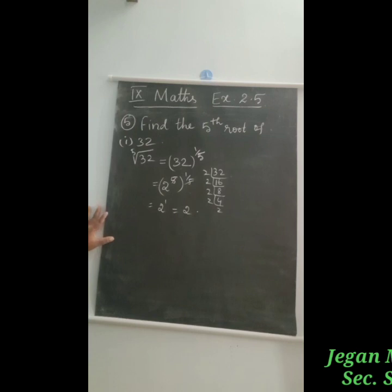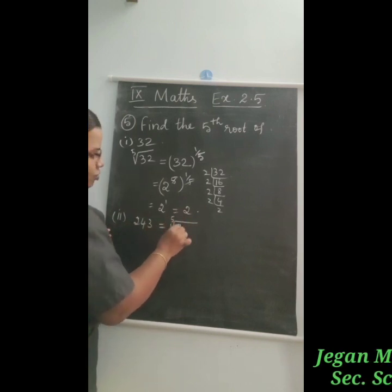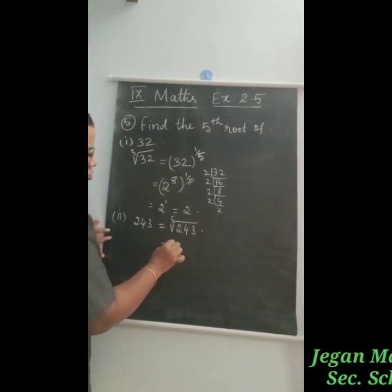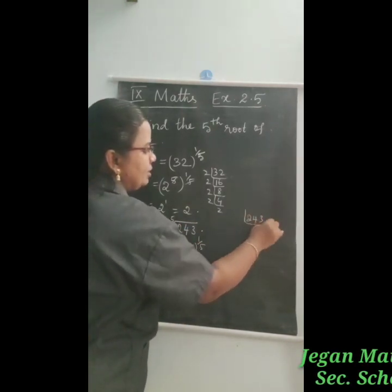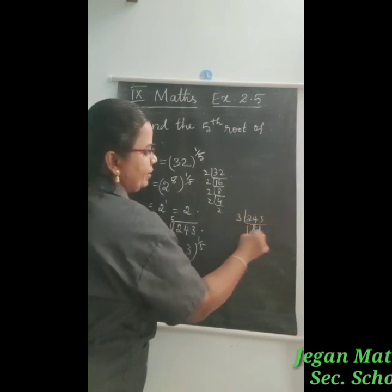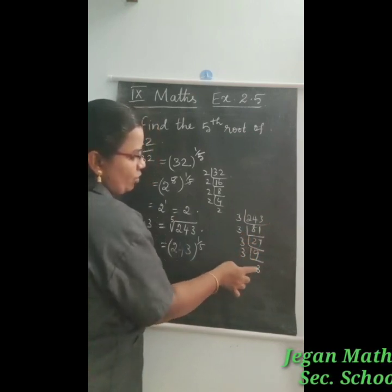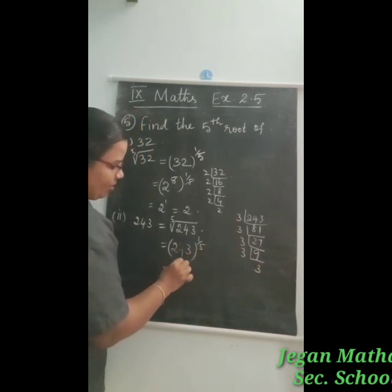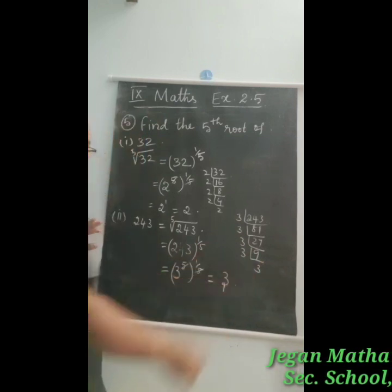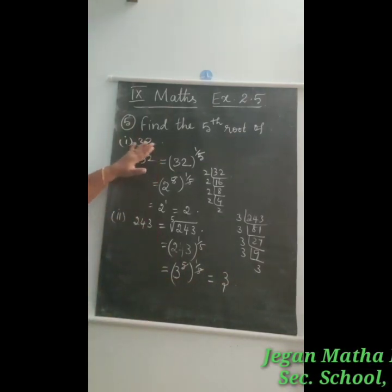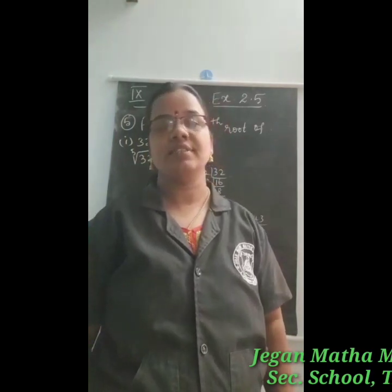Can you understand students? The next one is 243. We have to find the 5th root of 243, which equals 243 the whole power 1 by 5. Factorizing 243 by 3 repeatedly: 243 ÷ 3 = 81, ÷ 3 = 27, ÷ 3 = 9, ÷ 3 = 3, ÷ 3 = 1 — so 243 equals 3 power 5. Therefore 3 power 5, the whole power 1 by 5 — the 5 and 5 cancel, giving 3 power 1, equal to 3. This is the answer for the 5th root of 243. Thank you for listening. We will see the next exercise in the next class.